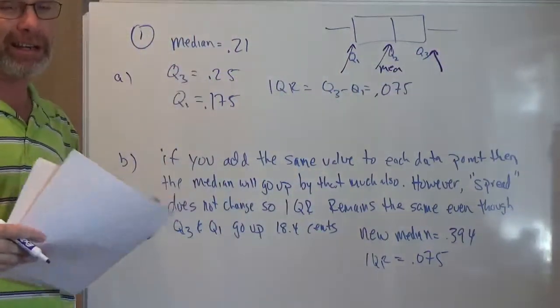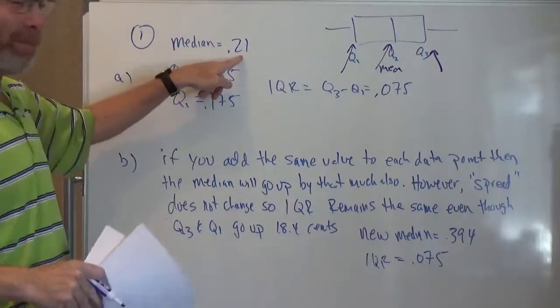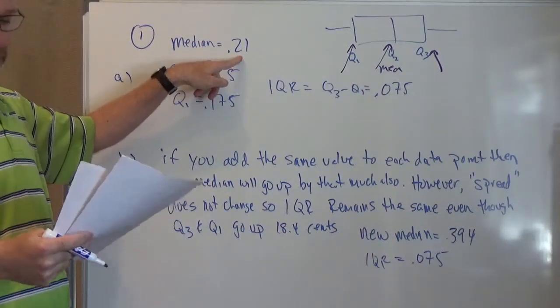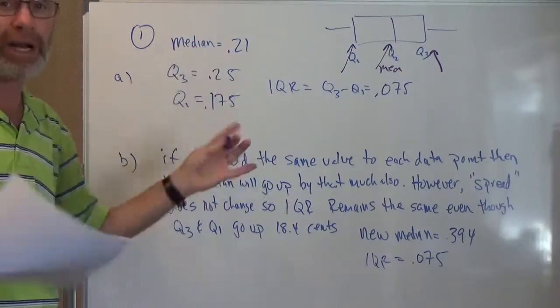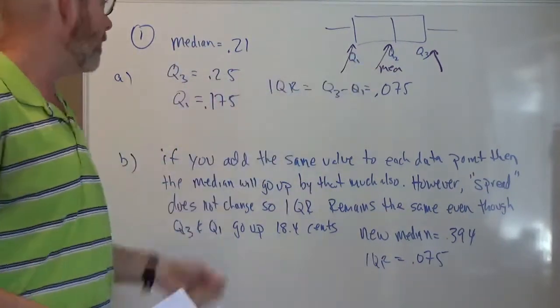They're a little bit lenient as long as your answers are close. Some people might have put 20 cents here, some might have put 21. I put 21. If you put 20, it's fine as long as you marked it. So the median is 21.